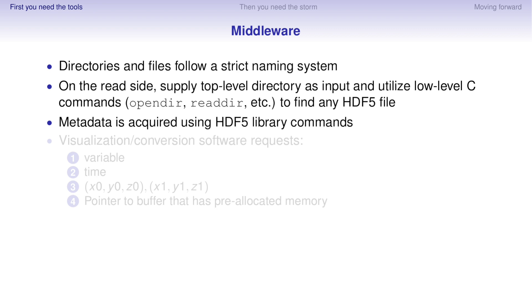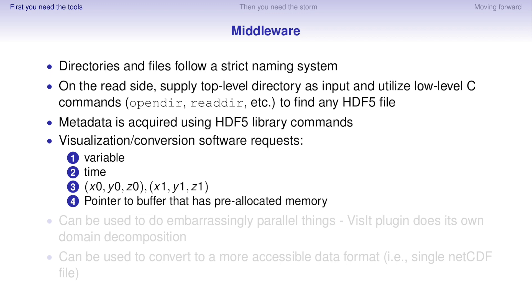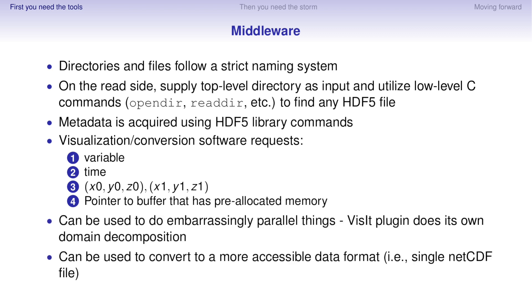And then the calling program, whether it's a visualization program or a conversion program, requests the following things: a variable at a given time over a given domain and a pointer that's been allocated to that. So this is really nice because you can pick a plane, a point, a line, or a three-dimensional cube. It just spits the data back. So you can do all sorts of stuff.